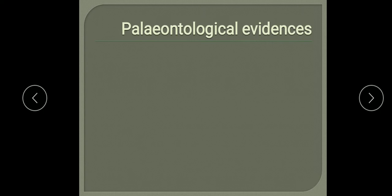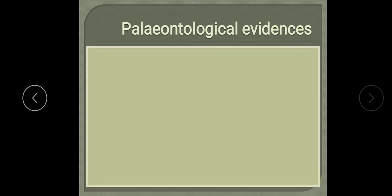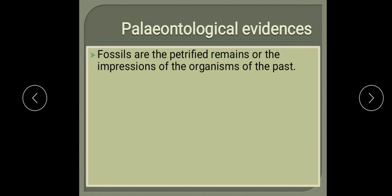First we will start with paleontological evidences. The word paleontological comes from paleontology, which is the study of fossils. Fossils are petrified remains or the impressions of organisms of the past. Petrified means they are preserved forms — both external and internal structures of animals and plants are preserved.